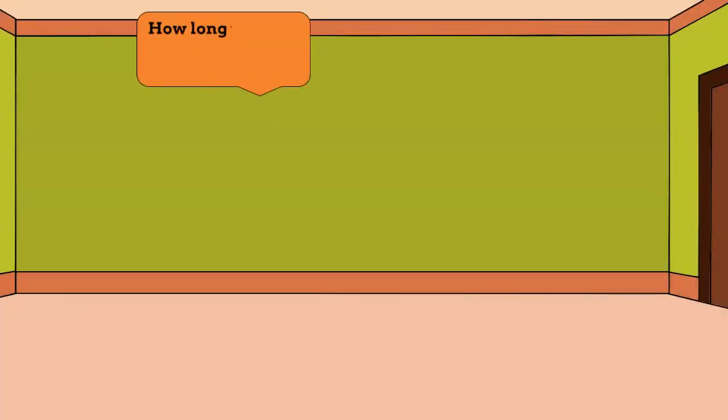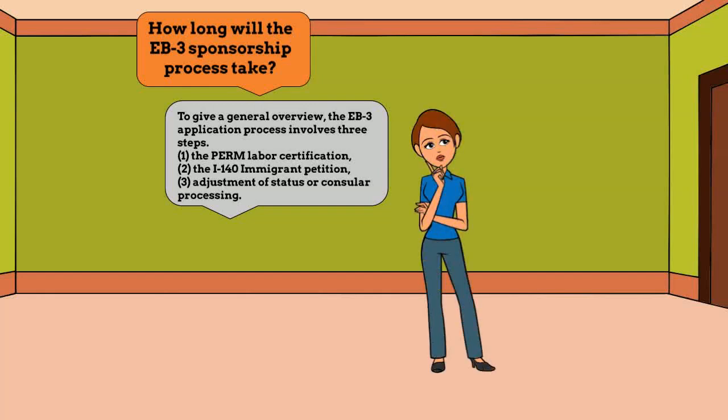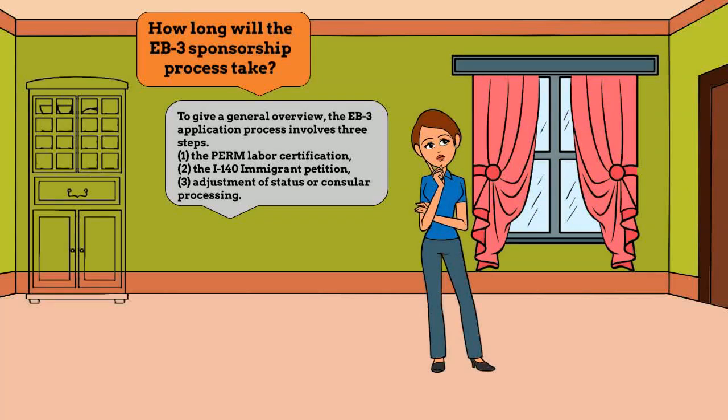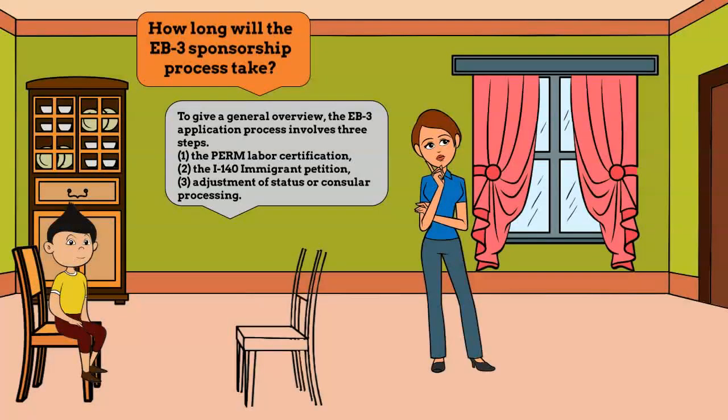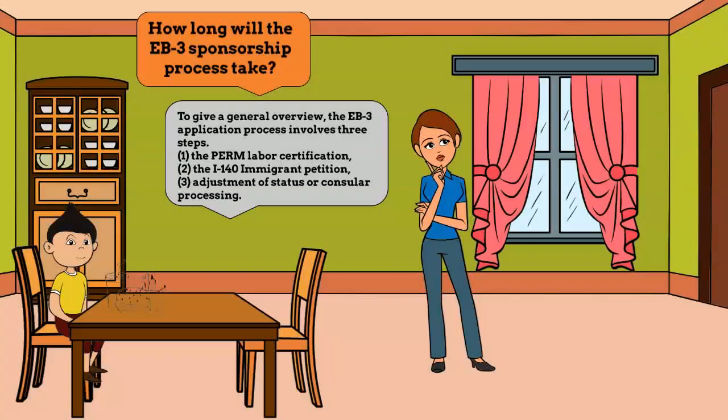How long will the EB-3 sponsorship process take? To give a general overview, the EB-3 application process involves three steps. One, the PERM labor certification. Two, the I-140 immigrant petition. Three, adjustment of status or consular processing.